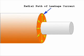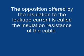The path of leakage current is radial through the insulation as shown here. The opposition offered by the insulation to the leakage current is called the insulation resistance of the cable.